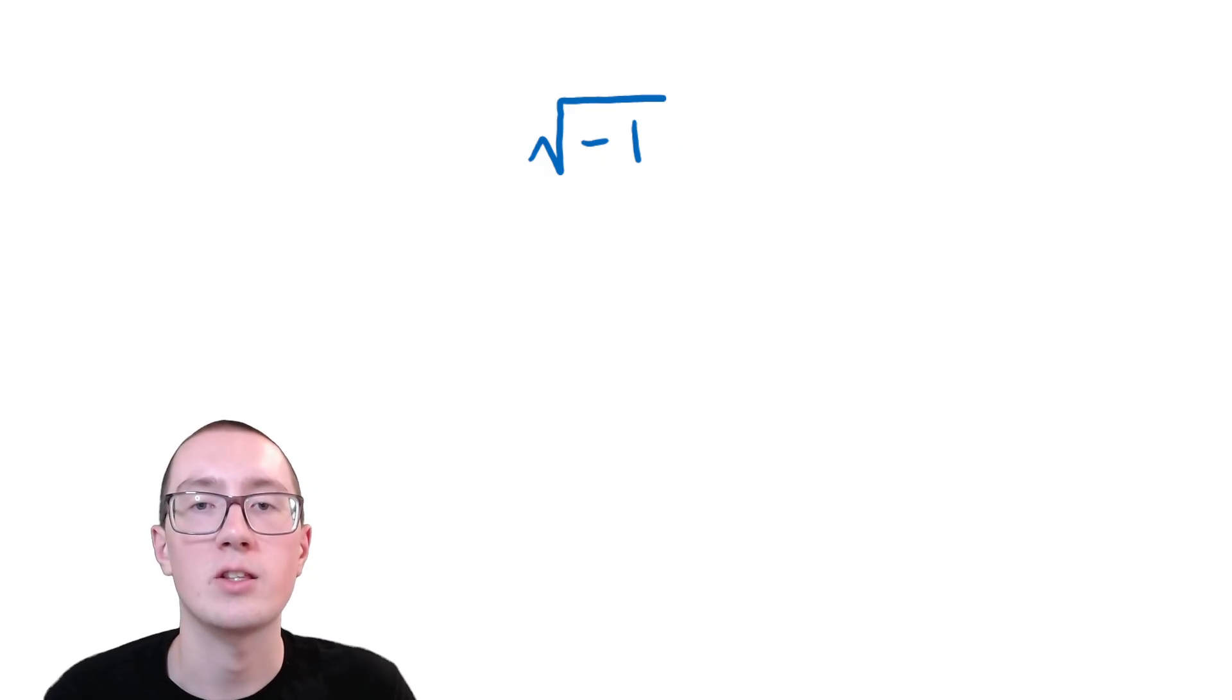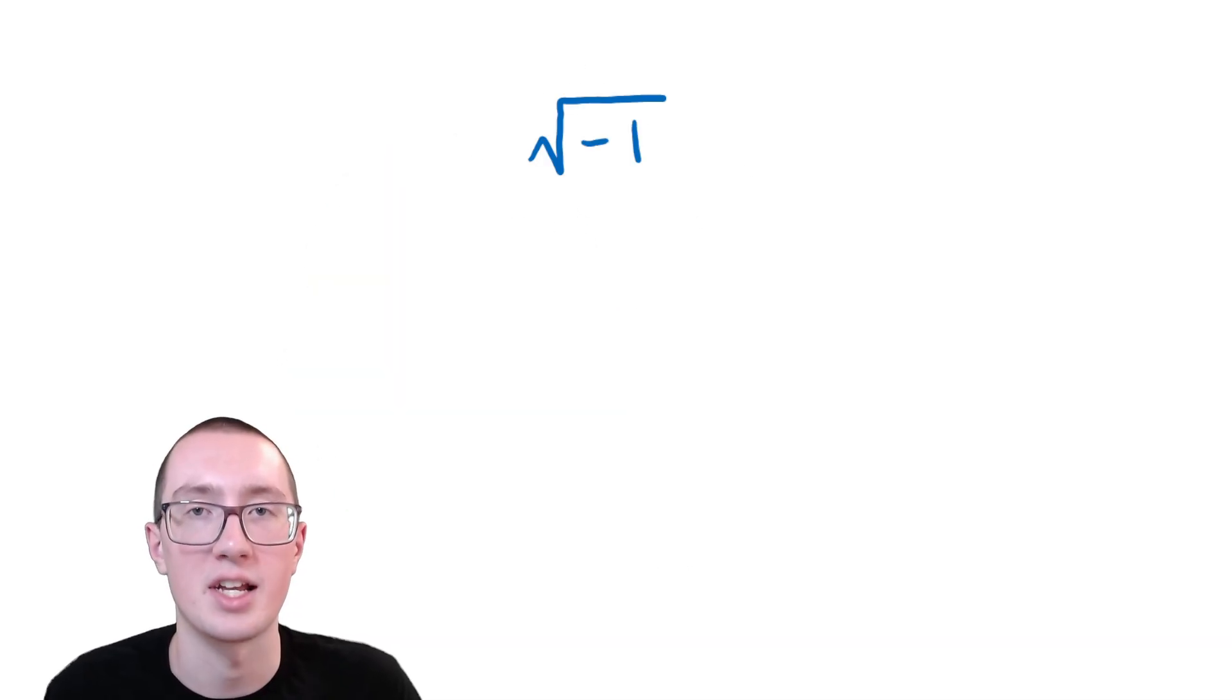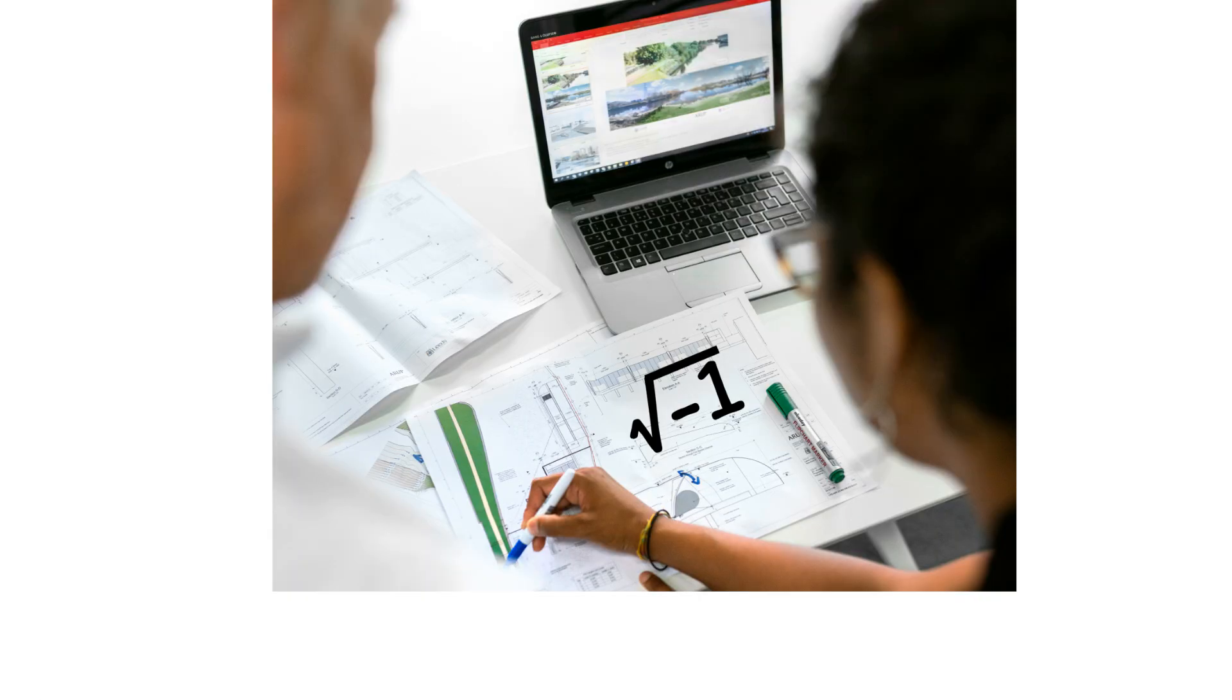But you may have learned that you can't take the square root of a negative number, because no matter what, if you multiply two of the same number, it will always turn positive. So you can't take the square root of a negative number.